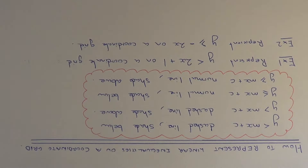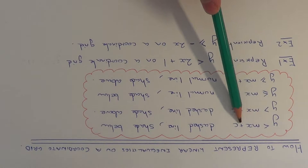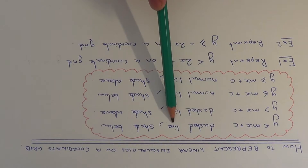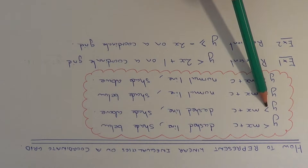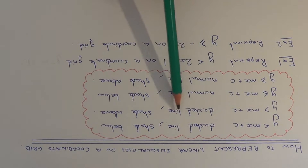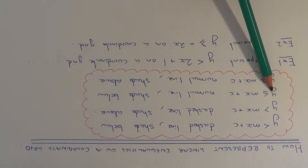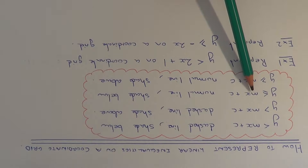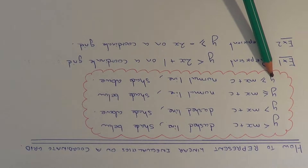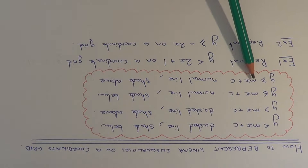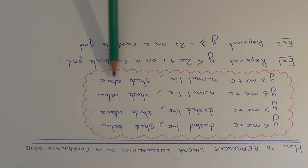So the four rules you need to know: if it's y is less than mx plus c, you do a dashed line and you shade below. If it's y is more than mx plus c, you do a dashed line and you shade above. If it's y is less than or equal to mx plus c, you do a normal line and you shade below. And for y is more than or equal to mx plus c, you do a normal line and you shade above.